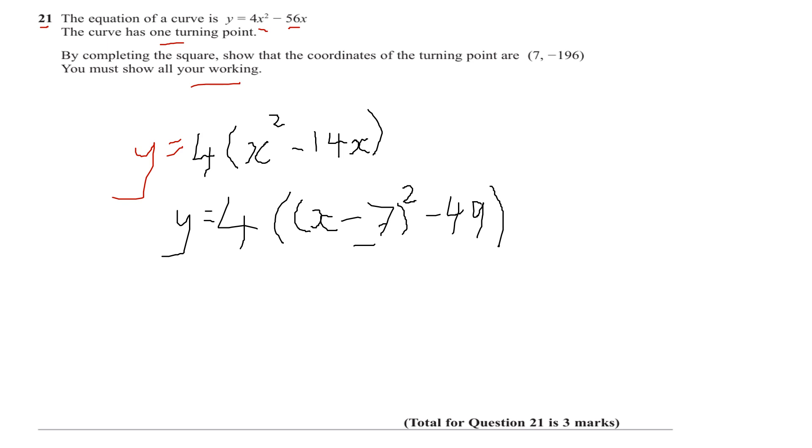So now what am I going to have? Well, I'm going to have y equals, expanding the bracket with the 4. So 4 lots of this and then 4 lots of this. I'm going to get 4 brackets (x minus 7) all squared, and then 4 lots of minus 49. Double that and then double it again, so that'll be 98, double 98 it'll be 196.